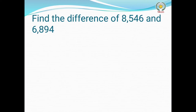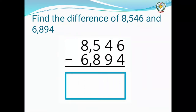Find the difference of eight thousand five hundred forty-six and six thousand eight hundred ninety-four. The word 'difference' is used for subtraction. In subtraction, the larger number is always written on top. Here 8546 is larger so it is written on top, and 6894 is smaller so it is written below. Always remember: in subtraction, the bigger number goes on top.